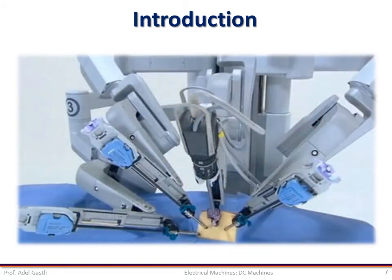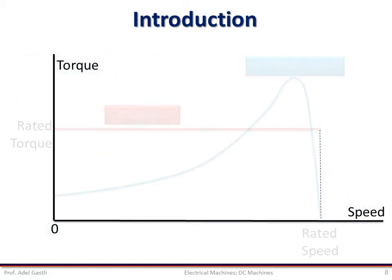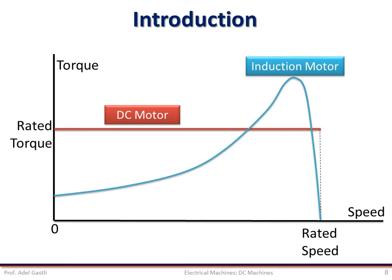DC motors provide fine control of speed which cannot be attained by AC motors, so in some applications it is favourable to use DC motors instead of AC motors, such as robotic applications in surgery. Unlike AC motors such as induction motors, DC motors can develop rated torque at all speeds from standstill to rated speed. Developed torque at standstill is many times greater than that developed by AC motors of equal power and speed rating.